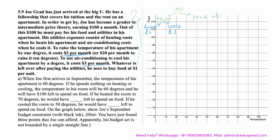When Joe arrives in September, the temperature is 60 degrees. If he spends nothing on heating or cooling, his room stays at 60 degrees and he has $100 left. So in September, the first point on the budget constraint is (60, 100): temperature is 60 degrees and he has $100 to spend on food.